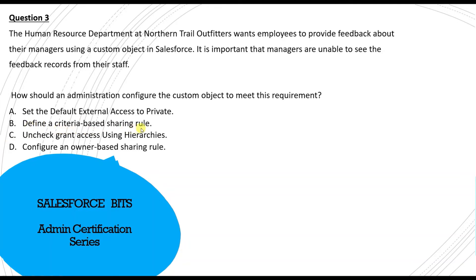Option B is to define a criteria-based sharing rule — but sharing rules extend access, not limit it, and criteria-based rules depend on field values, which may not be relevant here. Option D is to configure an owner-based sharing rule — but again, sharing rules extend access rather than restrict it. To limit access to managers, the correct option appears to be C: uncheck grant access using hierarchy. Let me show you how.